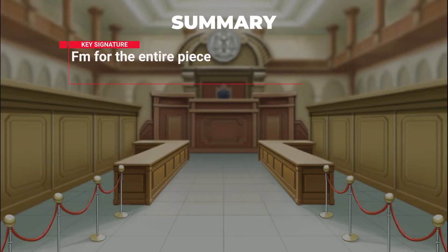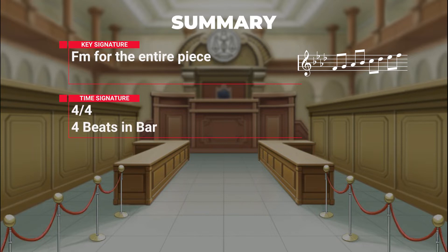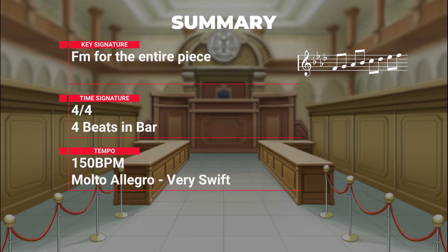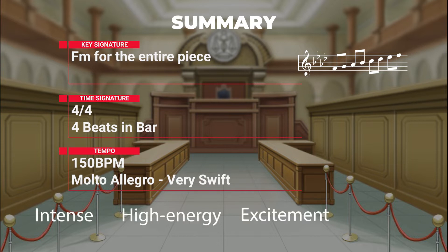The key signature is a consistent F minor throughout. The time signature is also a consistent 4/4, meaning there are four crotchet beats or quarter notes in a bar. The tempo is around 150 beats per minute, also known as molto allegro, or very fast. In terms of the feelings created when experiencing this music in-game, it's feelings of intensity, high energy, excitement and liveliness. The two key themes across the entire piece are hero and justice — you are the hero of Phoenix Wright, and justice is being served.